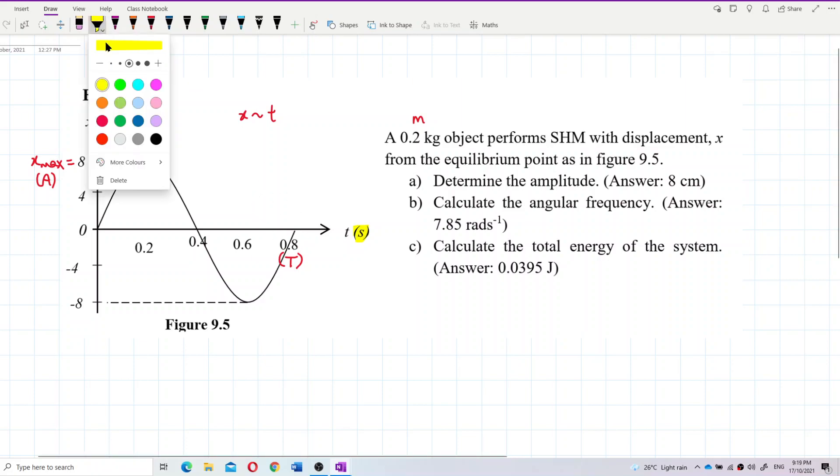Period is 0.8 second. This is the thing we should take note. Take note of this one and this one. So now, let's continue. Do question A. So the amplitude is actually 8 centimeter. The unit is centimeter. Is the answer correct? Yes. 8 centimeter. That's correct.